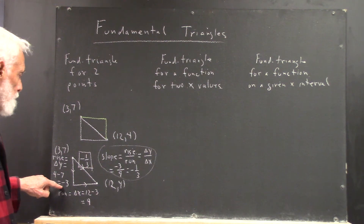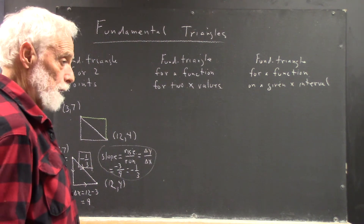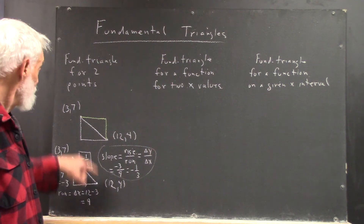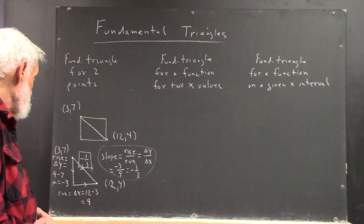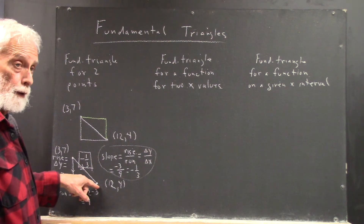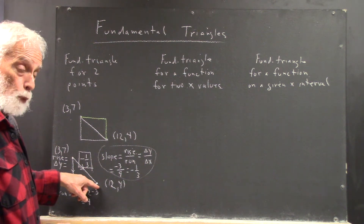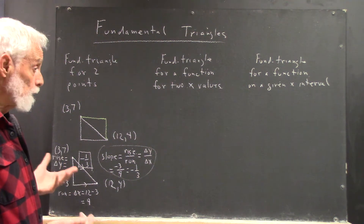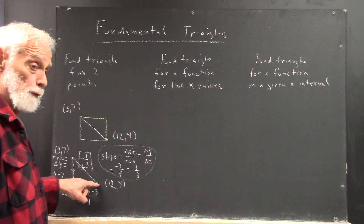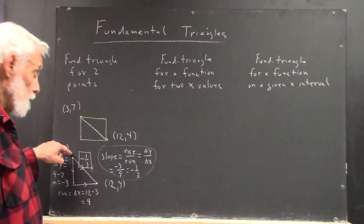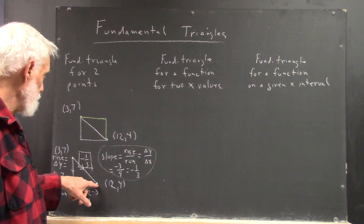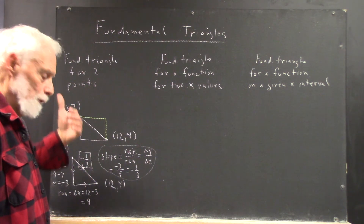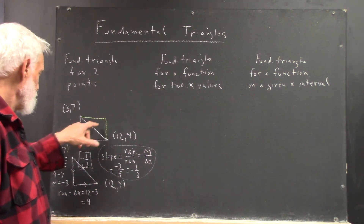To complete this: the rise is delta y, which equals 4 minus 7, which is negative 3. The run is delta x, which is 12 minus 3, which is 9. And the slope is rise over run — that's written off to the side; don't clutter up the picture of the triangle. That's what I mean by fundamental triangle. The hypotenuse connects two points that define the triangle, called vertices. One leg is horizontal, one leg is vertical, and each leg must pass through one of the vertices.